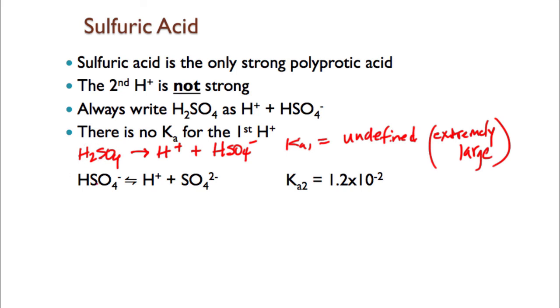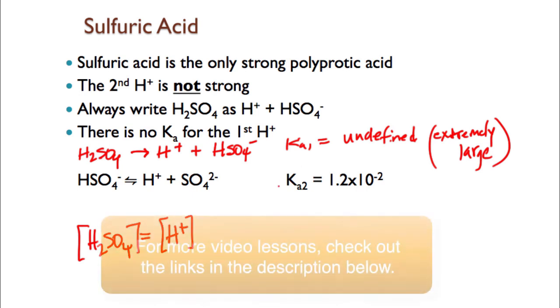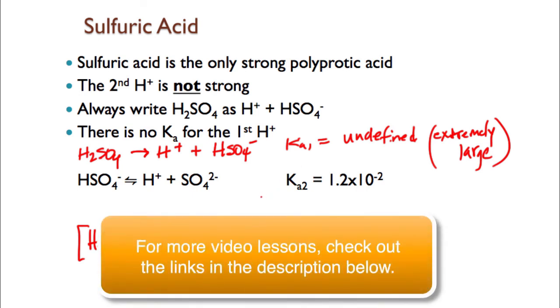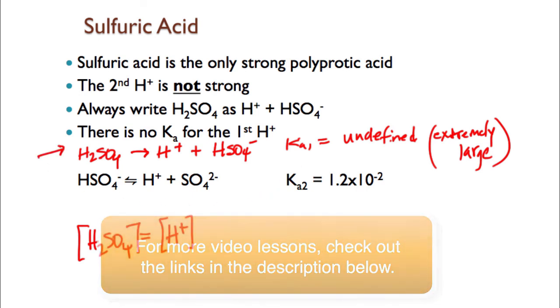Whatever the concentration of the sulfuric acid is, H2SO4 concentration is going to be equal to your hydrogen concentration for that first step only. Then we treat this one as if it were a weak acid with a Ka value. Just like we said before, this first one would control the pH.